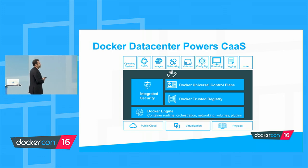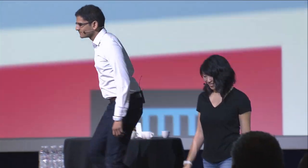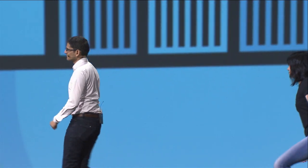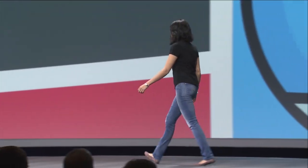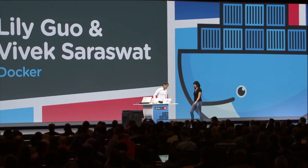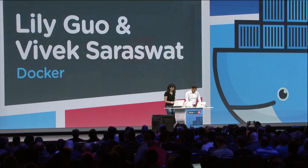Rather than talking about more slides, let's get going with some demos. To show what it looks like to deploy Docker Data Center and use CaaS in a real production environment, let's call up Lily and Vivek.